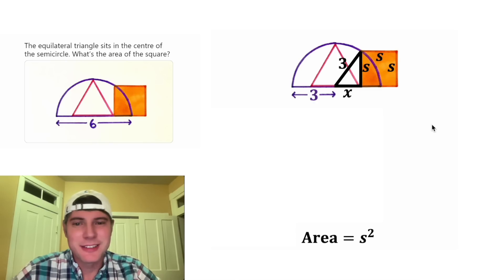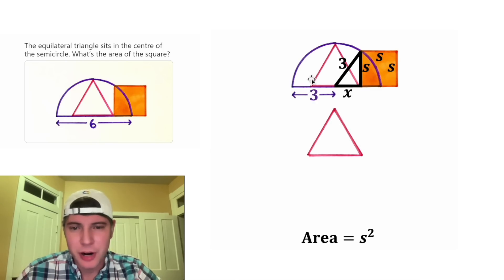And now let's solve for X. In the given equilateral triangle, the X is this portion right here. It's half of the base. Let's take this radius and rotate it over here.